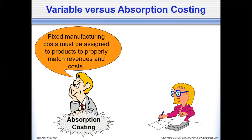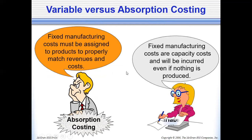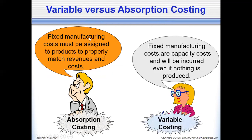Under GAAP absorption costing, fixed manufacturing costs must be assigned to products so that revenues and costs are properly matched. However, for variable costing, fixed manufacturing costs should be expensed and treated as period costs because they are capacity costs incurred even if nothing is produced. There is a conflict between the two approaches, but neither is universally better — it depends on the context and purpose.